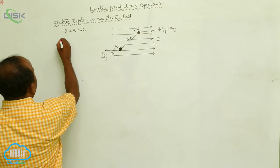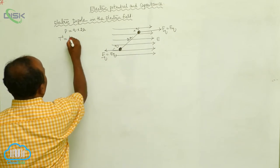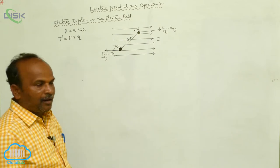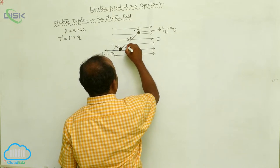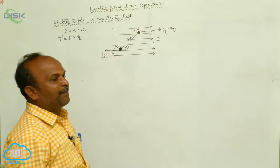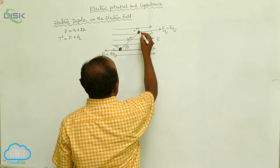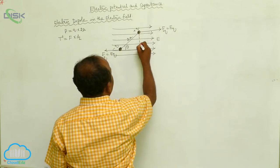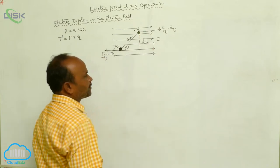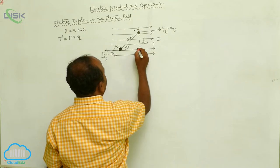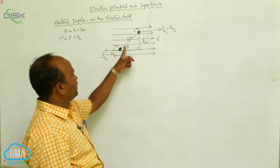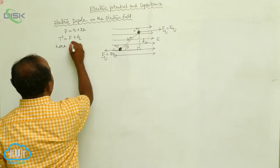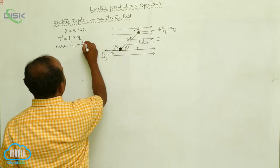That turning effect can be explained through the torque. Torque equals force into perpendicular distance. If the dipole is making an angle theta with respect to the electric field, we need to find the perpendicular distance. In the right-angled triangle formed, the perpendicular distance equals 2A sine theta.